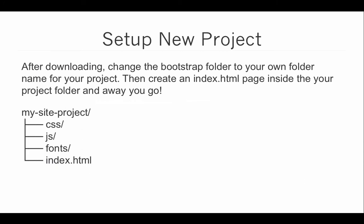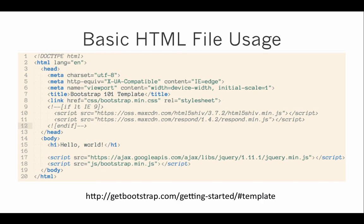After downloading the zip file, you'll want to rename the bootstrap folder to a name that suits your own website project. Here it's been renamed to my-site-project, but for example, if we were building a website for Stanley's Used Furniture, we might want to change the name to Stanley's-used-furniture-site. The next thing you'll do is create an index.html page inside your project's root folder, sitting outside the CSS, JavaScript, and fonts folders. Then open up your index.html file and set up the markup structure of a basic Bootstrap HTML document.